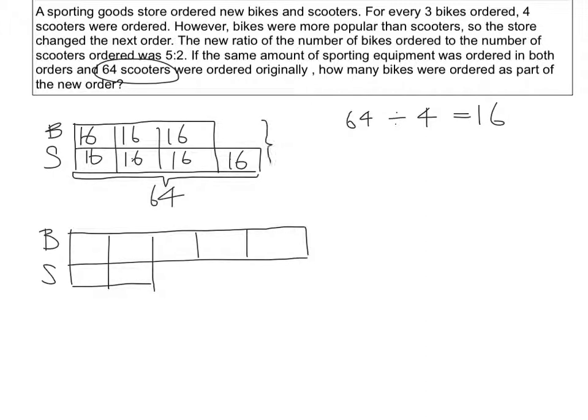And the total number of sporting goods ordered is actually equal to 7 units. 1, 2, 3, 4, 5, 6, 7. 7 units times 16, which should give us 112.